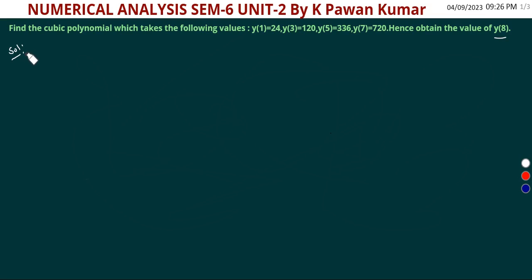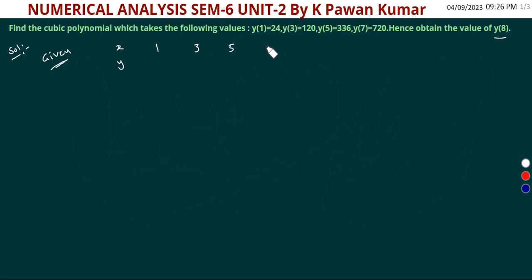In the solution, we will first write the given table. Here x values are 1, 3, 5, 7 and the corresponding y(x) values are 24, 120, 336, and 720.